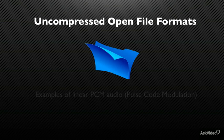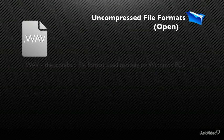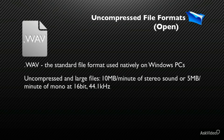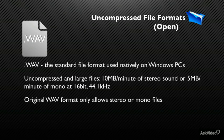Let's start with uncompressed open file formats. These file types are examples of linear PCM audio. Wave files are the standard audio file format used natively in Windows PCs. Wave files are uncompressed, and the files can be large — 10 MB per minute of stereo sound, or 5 MB per minute of mono at 16-bit 44.1.